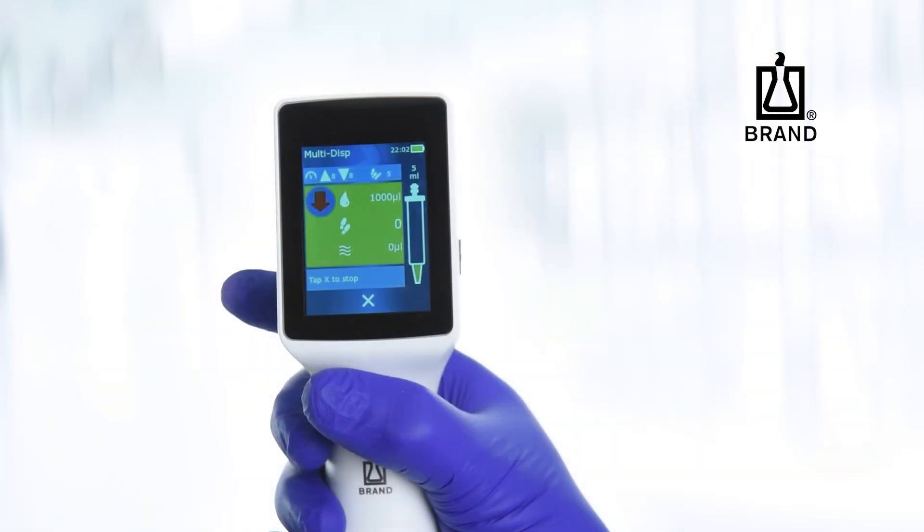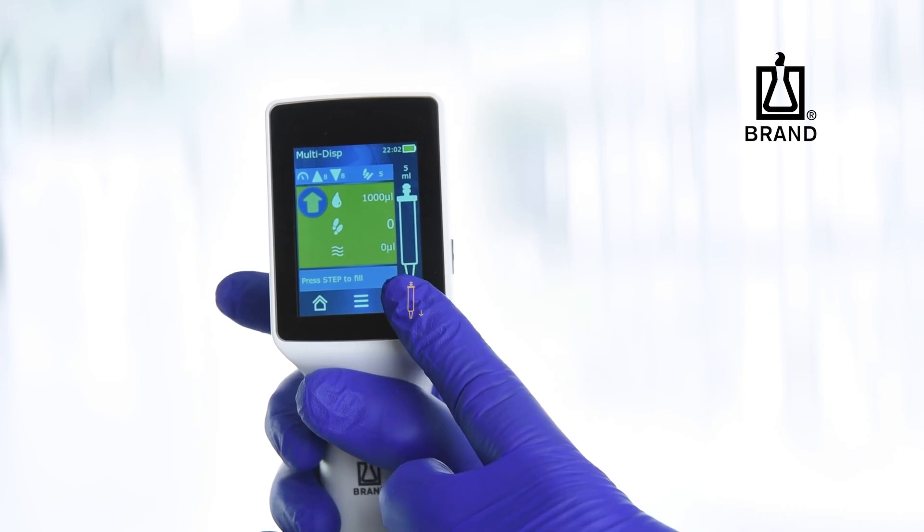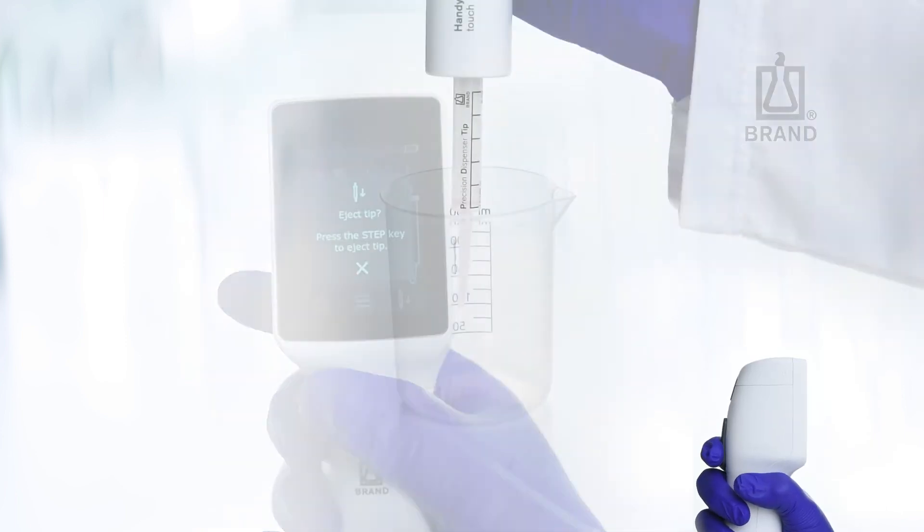When finished dispensing, purge or empty the PD-TIP by holding down the step key for several seconds. Tap the tip ejection icon and press the step key to eject the tip.